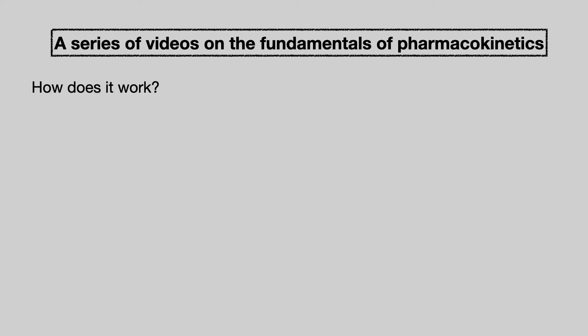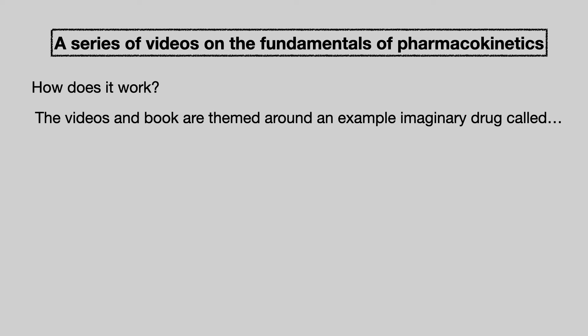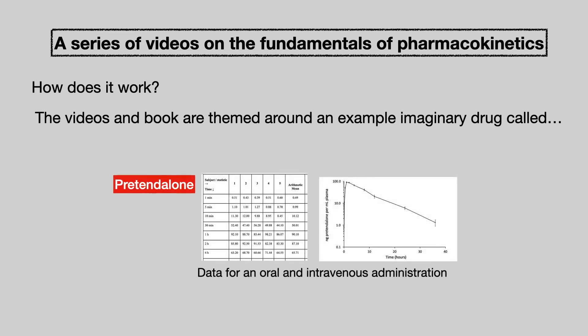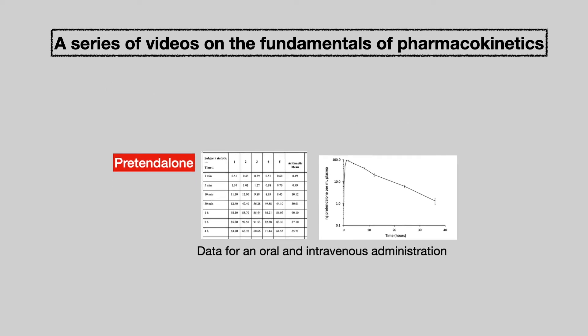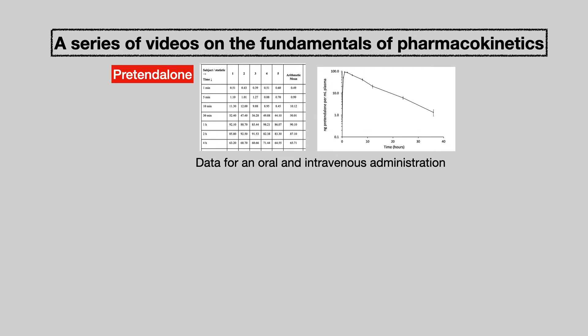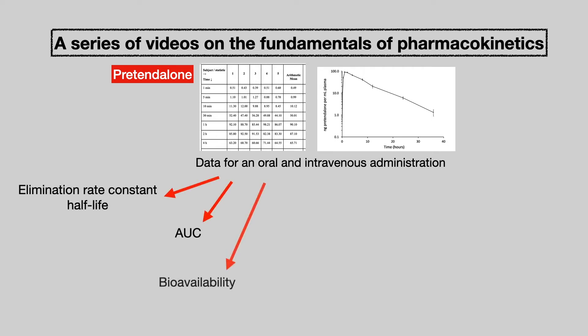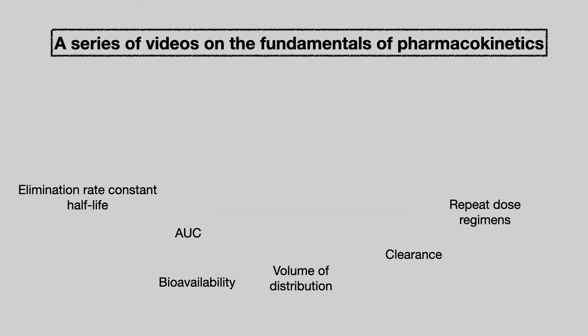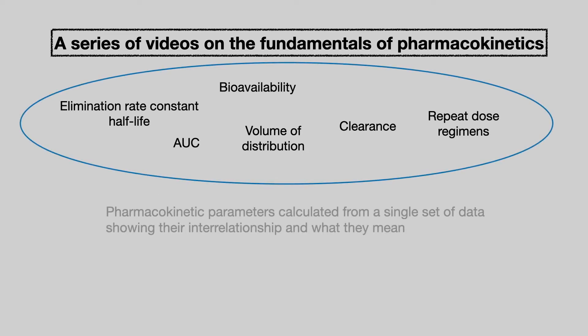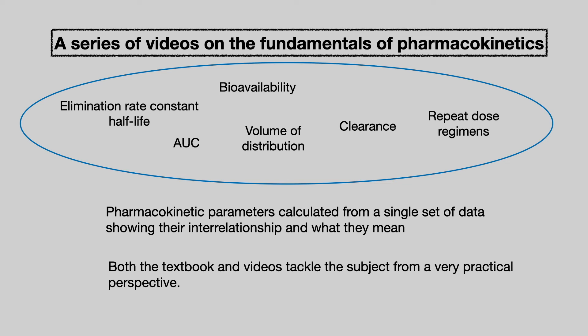So, how does this all work? The videos and textbook are themed around an imaginary drug called Pretendalone. We have data for oral and intravenous administrations, and we use those data to calculate a series of pharmacokinetic parameters. We then bring all those parameters together, and because we have calculated them using a single set of data, we can show their interrelationship and what they mean. Both the textbook and videos tackle the subject from a very practical perspective.